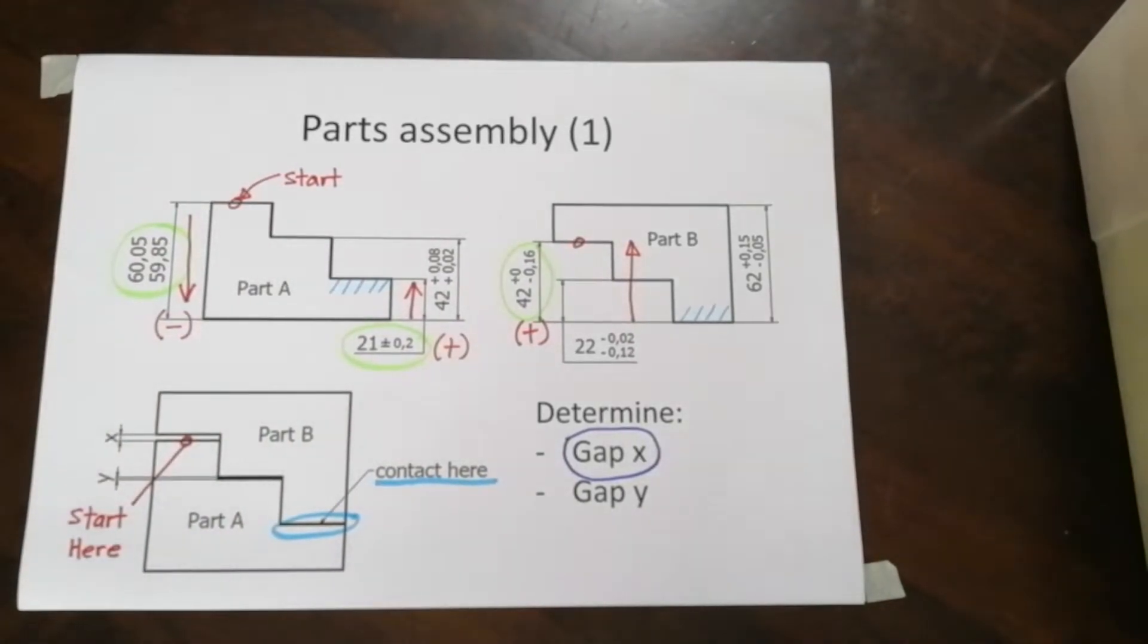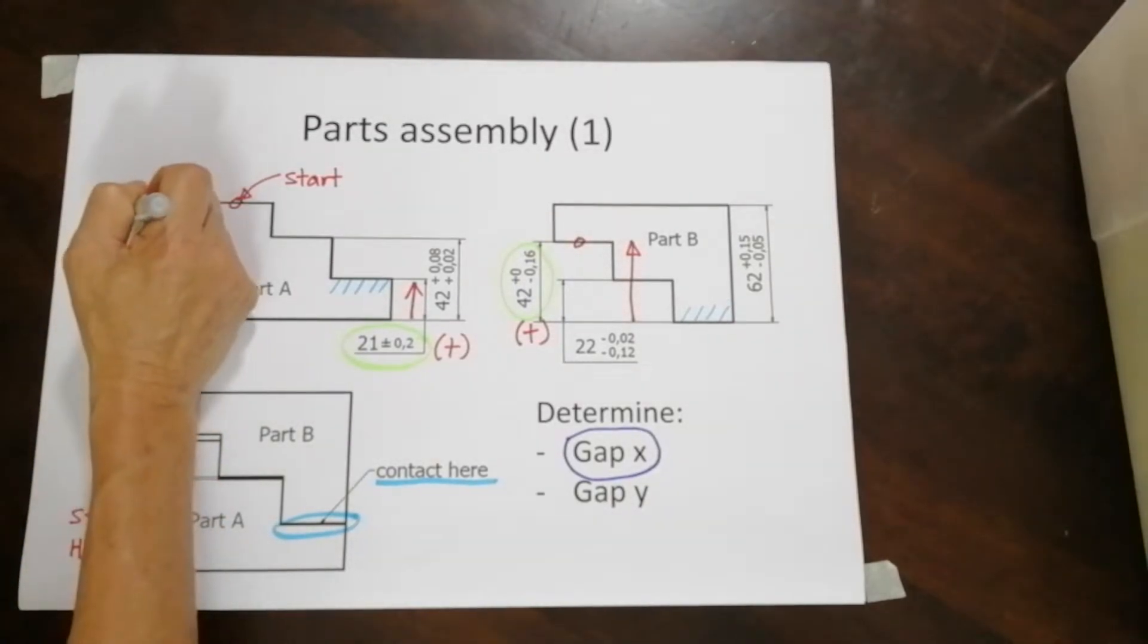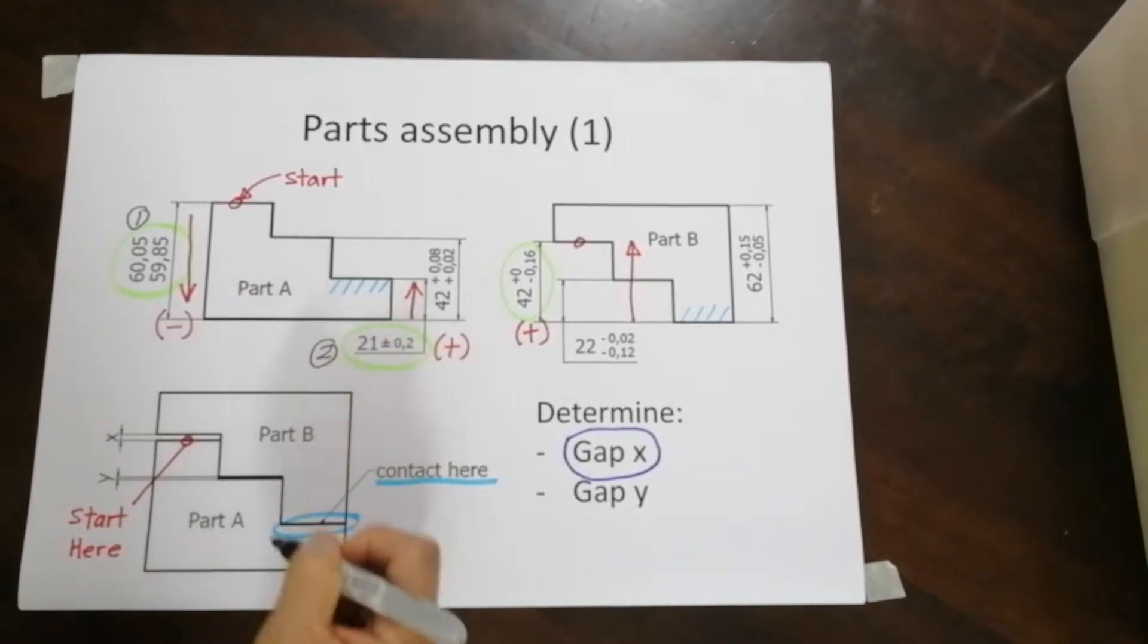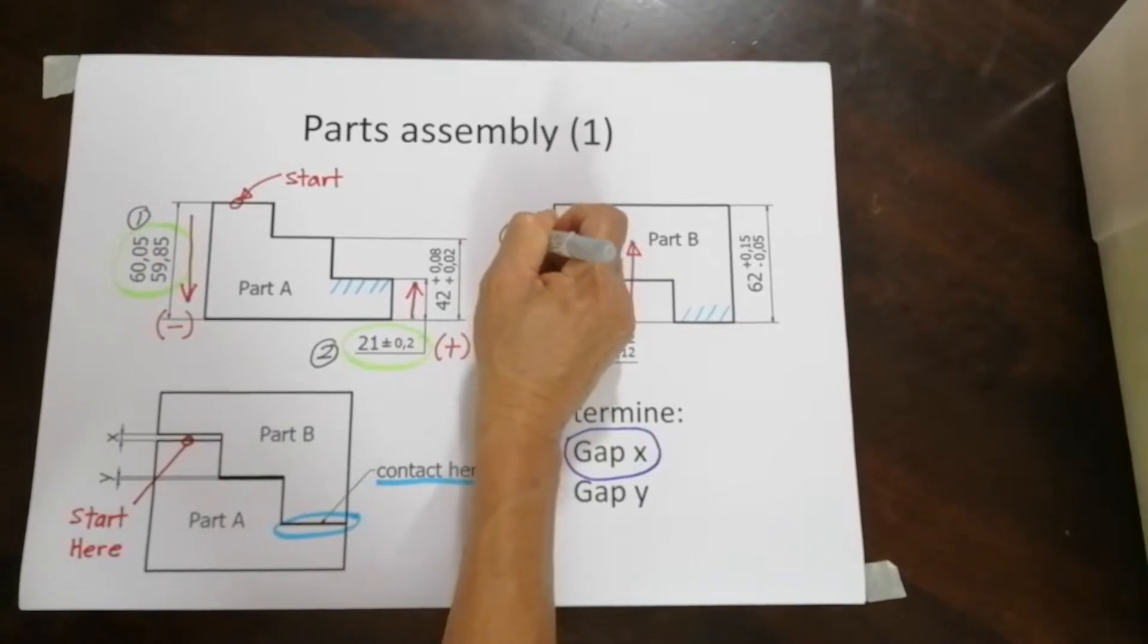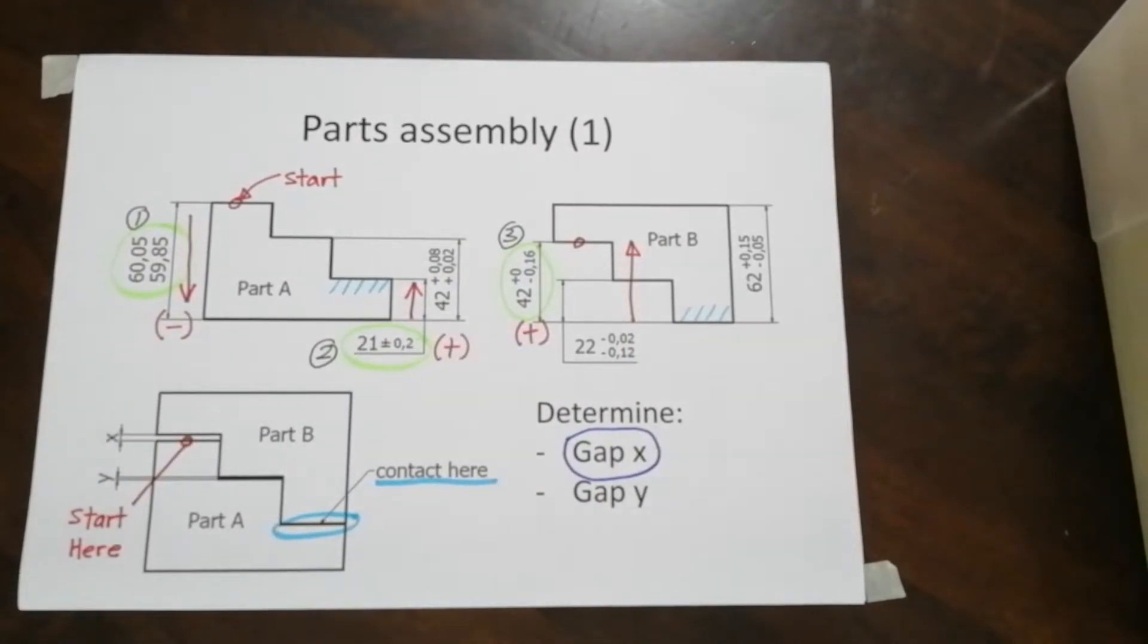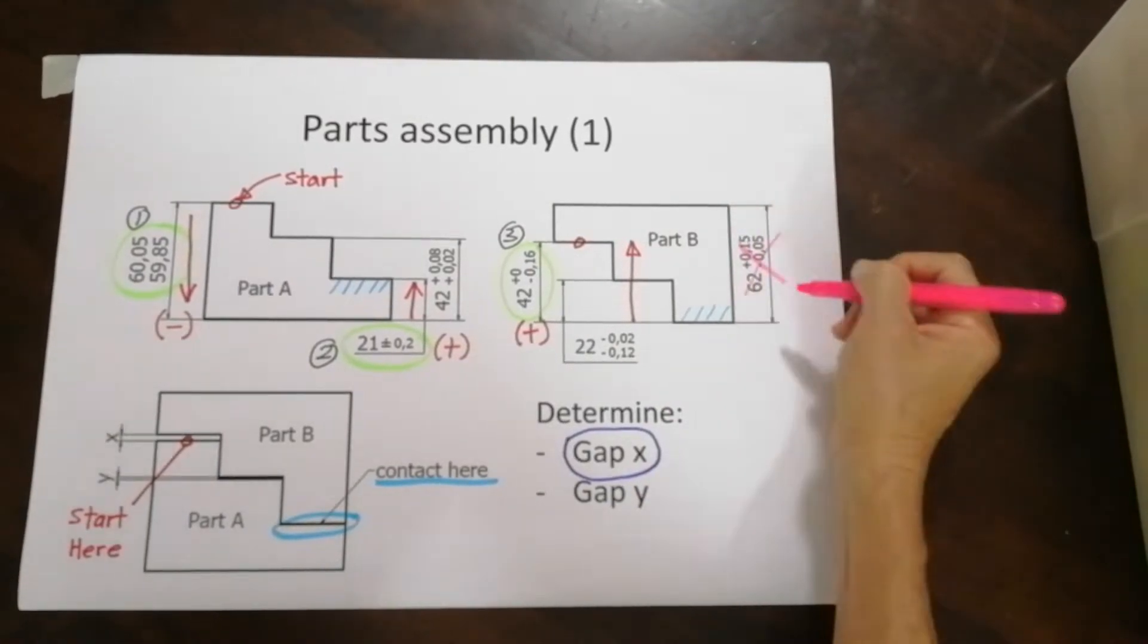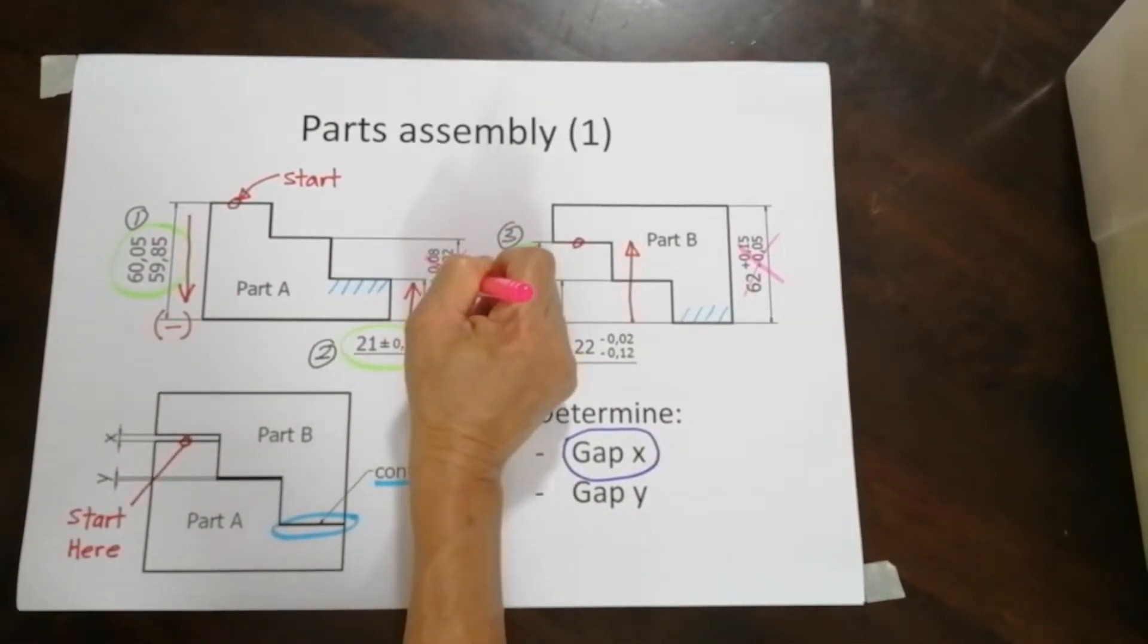So basically, three dimensions are involved. The first dimension is here, second dimension, and finally this is the third dimension. The rest of the dimensions are redundant. I'm going to cross it out. This is not used in this analysis, and this is also not used in this analysis.